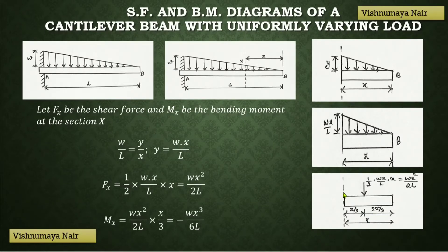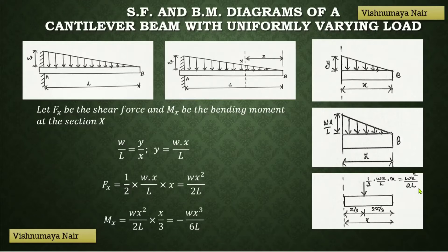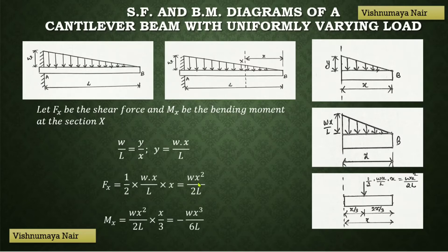Let's find out the shear force value acting at this section. Shear force is equal to the algebraic sum of the forces acting on the right portion of the section. Here we have only the force Wx²/2L acting in the downward direction, and any force acting in the downward direction on the right portion of the section will be considered as positive. Therefore, the shear force acting at this section is equal to +Wx²/2L.